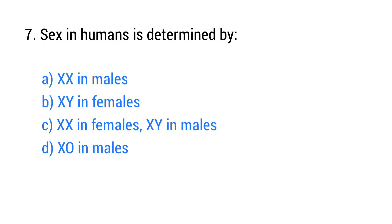Question number 7. Sex in humans is determined by? The right answer is option C: XX in females, XY in males.